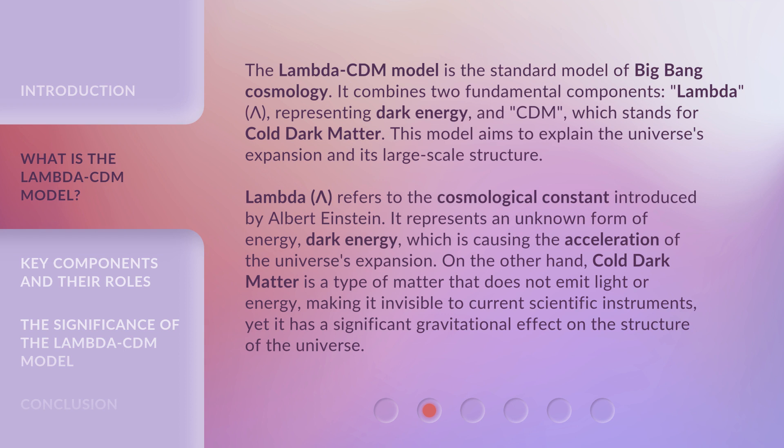Lambda refers to the cosmological constant introduced by Albert Einstein. It represents an unknown form of energy — dark energy — which is causing the acceleration of the universe's expansion. On the other hand, cold dark matter is a type of matter that does not emit light or energy, making it invisible to current scientific instruments, yet it has a significant gravitational effect on the structure of the universe.